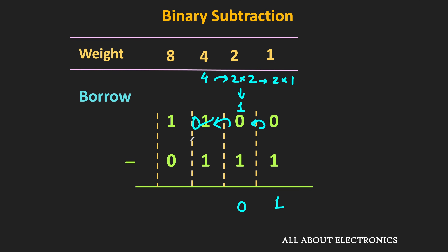Moving to the next column, after the borrow we have 0 minus 1. We cannot subtract, so we borrow from the eights column, replacing its 1 with 0. The weight of 1 in the eights column is 8, so in the fours column it becomes 2 times 4 — two 4s. Subtracting one 4 from two 4s gives one 4, so the coefficient is 2 minus 1 equals 1. In the last column, 0 minus 0 equals 0. After the subtraction, the result is 101.